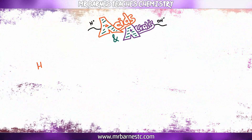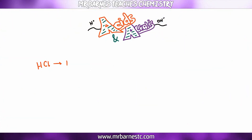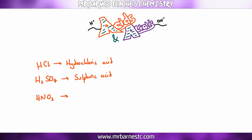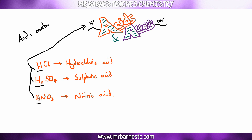The three main acids you need to know are HCl which is hydrochloric acid, H2SO4 which is sulfuric acid, and HNO3 which is nitric acid. The key thing about all three of these is they've all got hydrogen in, and it's that hydrogen ion — the H+ ion — that makes something acidic.